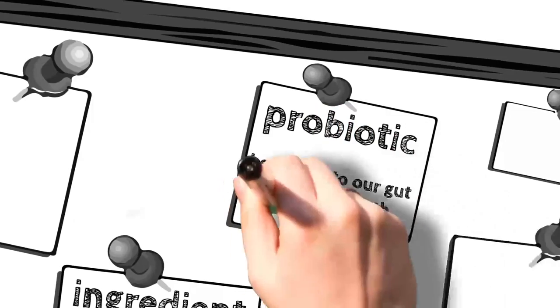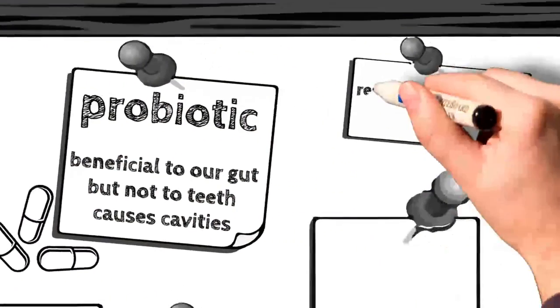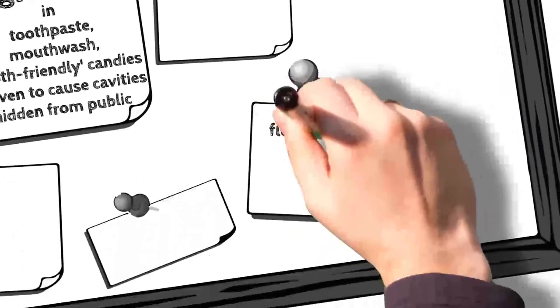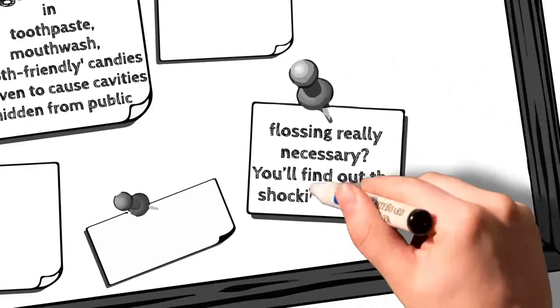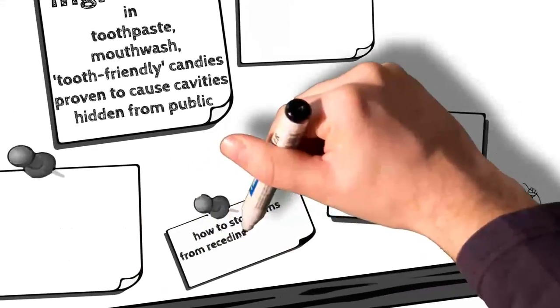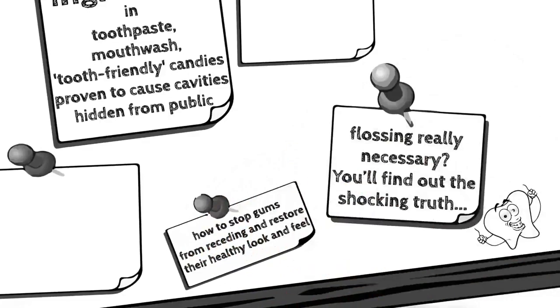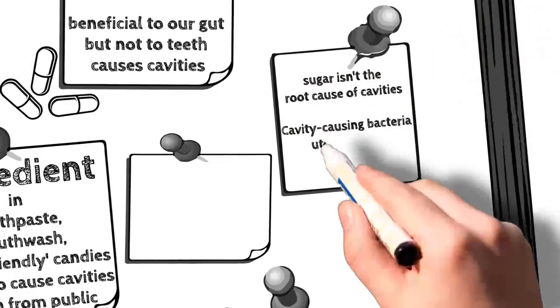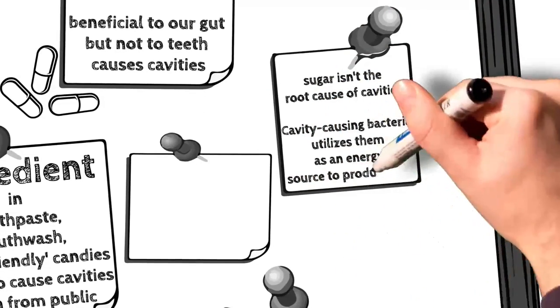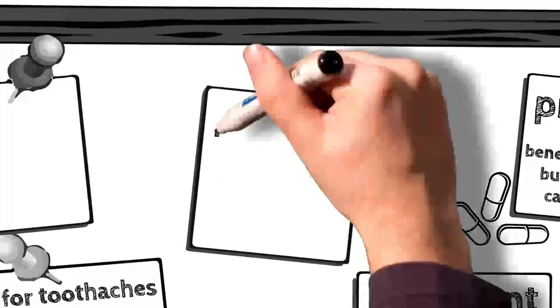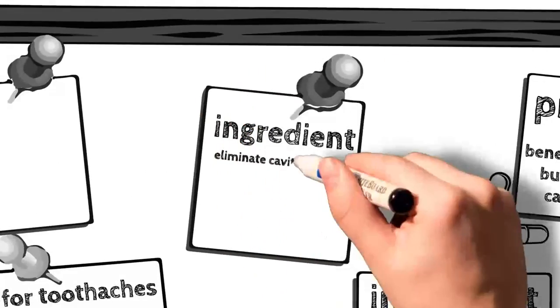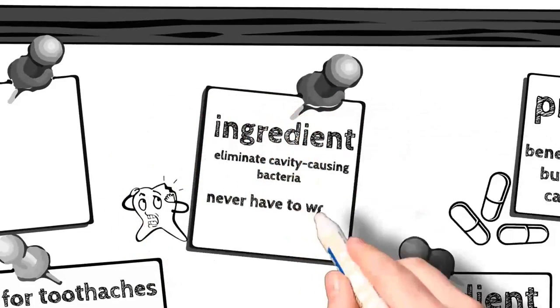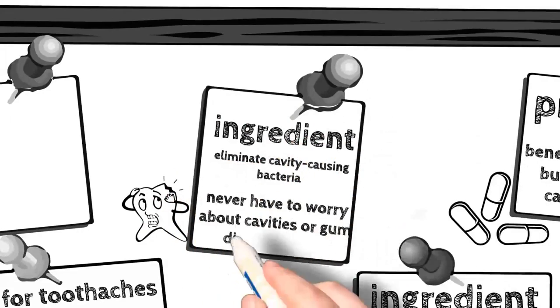A probiotic that's beneficial to our gut, but not beneficial to our teeth because it causes cavities. How to restore healthy gums, even after years of decline. Is flossing really necessary? You'll find out the shocking truth. How to stop gums from receding and restore their healthy look and feel. Unbelievably, sugar isn't the root cause of cavities. Cavity-causing bacteria utilizes them as an energy source to produce acid, but it isn't just sugar. This ingredient can eliminate cavity-causing bacteria in our mouth.